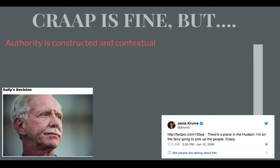Here's an example. The man on the left is Sully — that's his nickname — and he had to make a quick decision in 2009 to land an airplane in the Hudson River, just on the west side of New York City. Janice Crumbs was the very first person to tell this story, and he did it through Twitter. That tweet changed the world because people realized that social media was reporting faster than the news media.